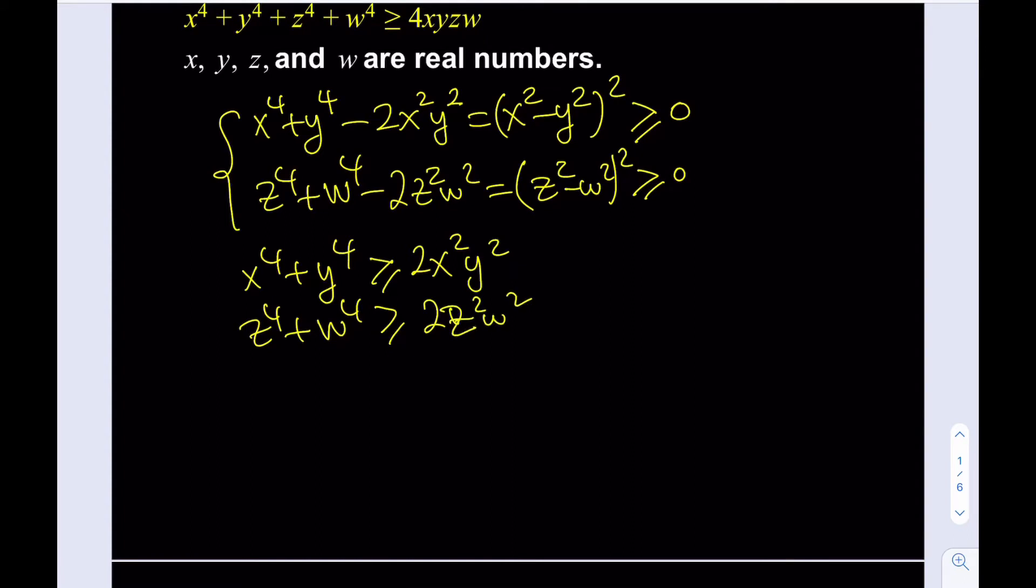Then I'll be adding these two inequalities side by side because that makes sense, because what I have here is the sum of fourth powers. So I'll be getting that by adding these two quantities. And let's see where this takes us. x to the fourth plus y to the fourth plus z to the fourth plus w to the fourth is greater or equal to 2x squared y squared plus 2z squared w squared.